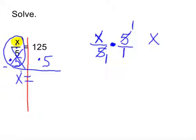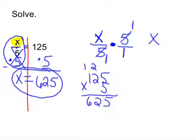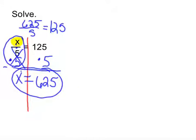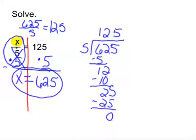Bring down the equal sign, and on the right we have 125 times 5, which is 625. Does that make sense? Going back to the original: 625 over 5 is supposed to equal 125. Let's check: 625 divided by 5 — 5 goes into 6 once, bring down the 2, goes in twice, bring down the 5, goes in 5 times, nothing left. That gives us 125, which is what I was looking for. I did that correctly.